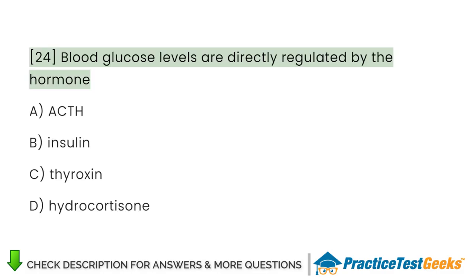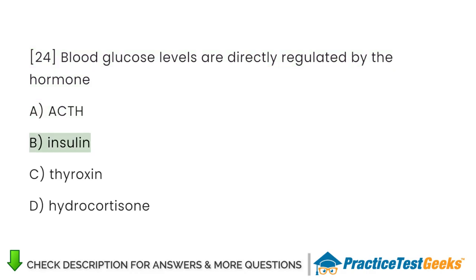Blood glucose levels are directly regulated by the hormone: A. ACTH. B. Insulin. C. Thyroxine. D. Hydrocortisone.